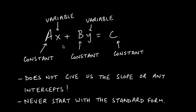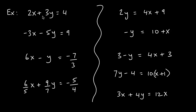Standard form looks more aesthetically pleasing, which is why we use it, but mathematically speaking, the point-slope form and slope-intercept form are far more useful. You should never start with the standard form when solving problems because there's no place to plug in the slope or the y-intercept. Here are examples of equations in standard form — notice the variables are on the same side and the constant is on the other side. If variables appear on opposite sides or mixed with constants, it's not standard form.